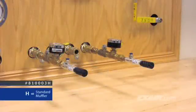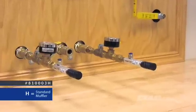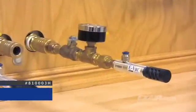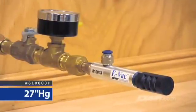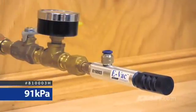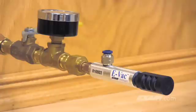The first model, 81003H, is a high vacuum generator for non-porous applications. High vacuum units up to 27 inches of mercury, which is 91 kilopascals, are typically used for non-porous materials such as glass, steel sheet, and plastic.